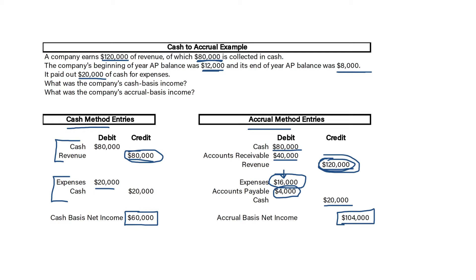The key with AR and AP is that whenever you have an increase in your AR balance, that's going to increase your accrual income versus the cash method income. And when you have an increase in AP balance, that's going to decrease your accrual method income, because you're recording a debit to expense and a credit to AP — no cash is occurring, so nothing is recorded as an expense under the cash method. Always pay attention to whether AP and AR balances are increasing or decreasing.